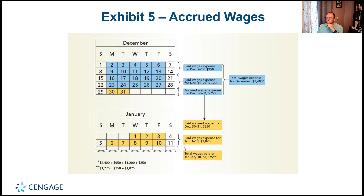Looking at the December calendar: employees are paid bi-weekly on Fridays. The first payment on the 13th covered 10 days, and the second on the 27th covered the next 10 days. The next payment will be on January 10th. However, employees worked two days in December — the 30th and 31st — which we haven't paid yet. We need to make an adjusting entry for these two days even though the full 10-day payment occurs on January 10th.